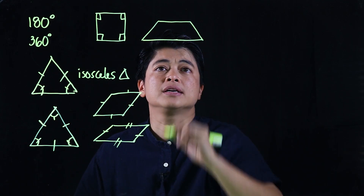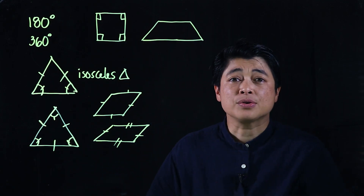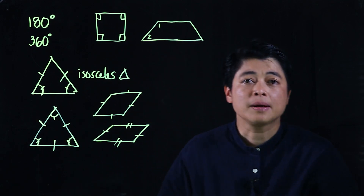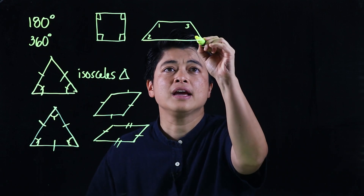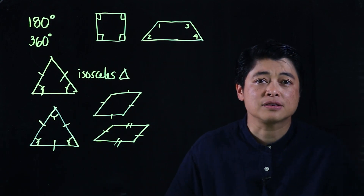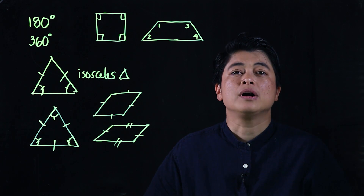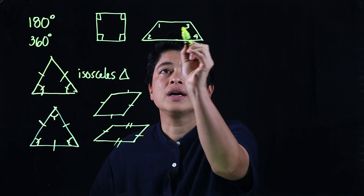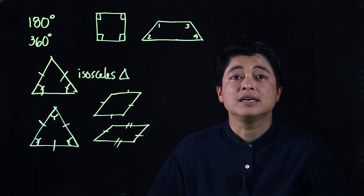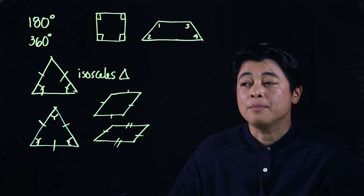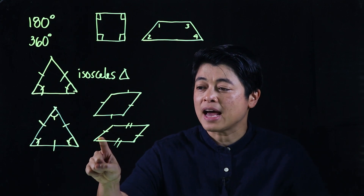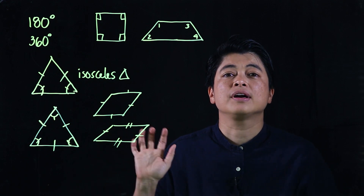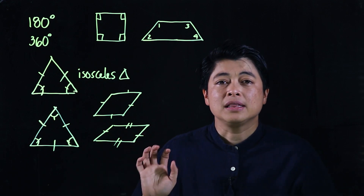However, a trapezoid is different from a parallelogram. In a trapezoid, only the co-interior angle pairs are supplementary — for example, angles one and two are supplementary, and angles three and four are supplementary. We can't say that angles one and three add up to 180 degrees, unlike in a parallelogram.